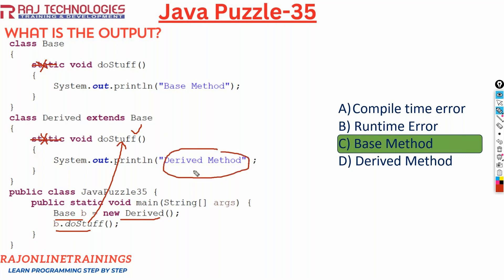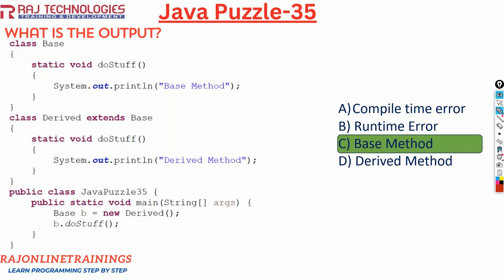Without the static keyword, the output will be 'derived method'. But if you are using the static keyword, it always goes to the base — it starts searching for that method from the base class. Static methods are not considered for overriding; static methods cannot be overridden. This is the main objective of this puzzle. Please subscribe, like, and share. Thank you.